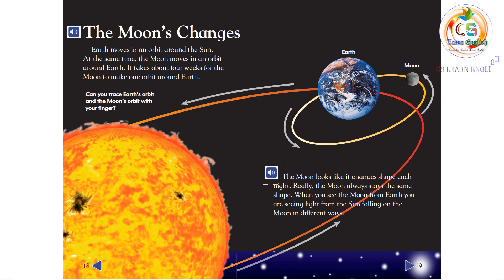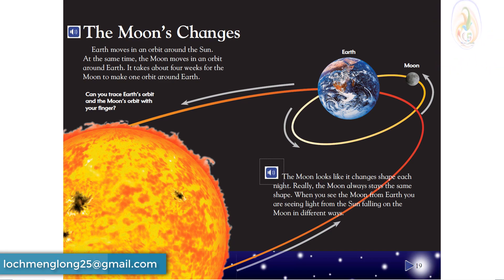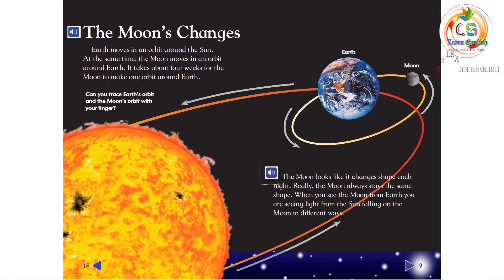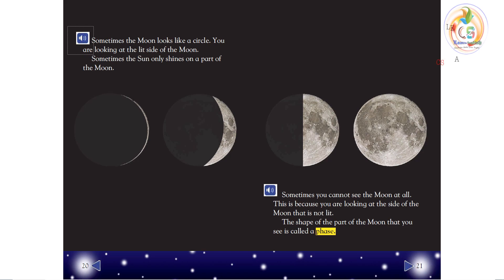The Moon looks like it changes shape each night. Really, the Moon always stays the same shape. When you see the Moon from Earth, you are seeing light from the Sun falling on the Moon in different ways. Sometimes, the Moon looks like a circle. You are looking at the lit side of the Moon. Sometimes, the Sun only shines on a part of the Moon. Sometimes, you cannot see the Moon at all. This is because you are looking at the side of the Moon that is not lit. The shape of the part of the Moon that you see is called a phase.